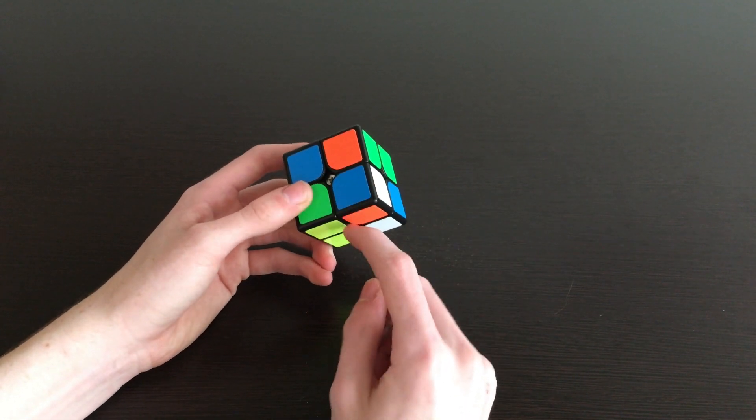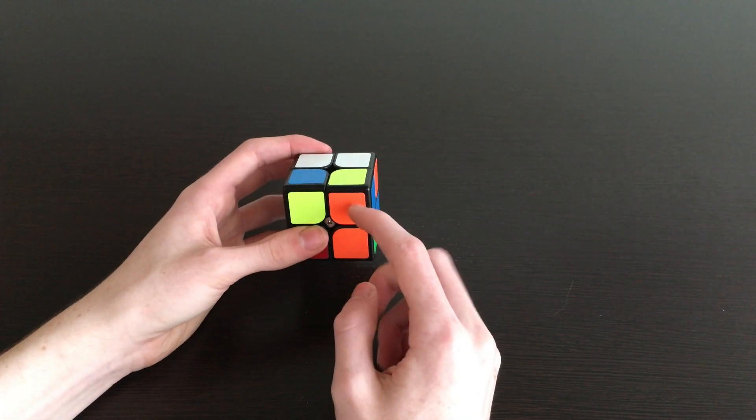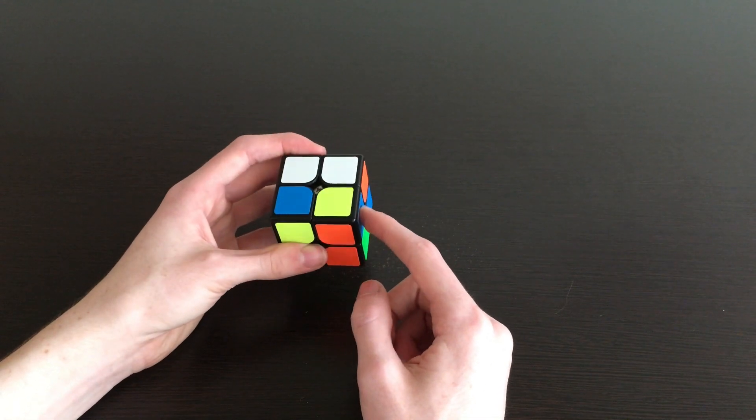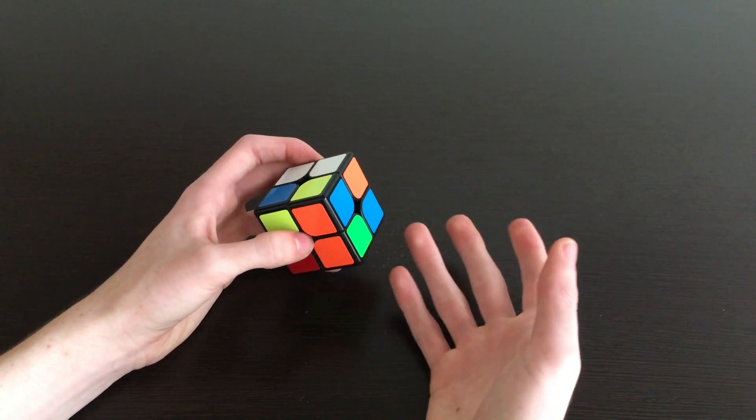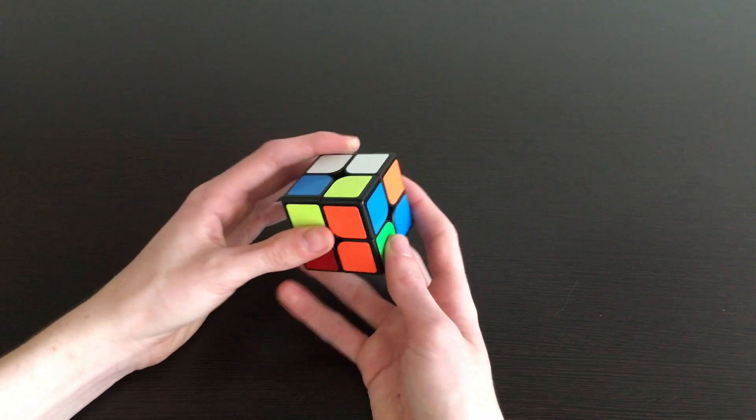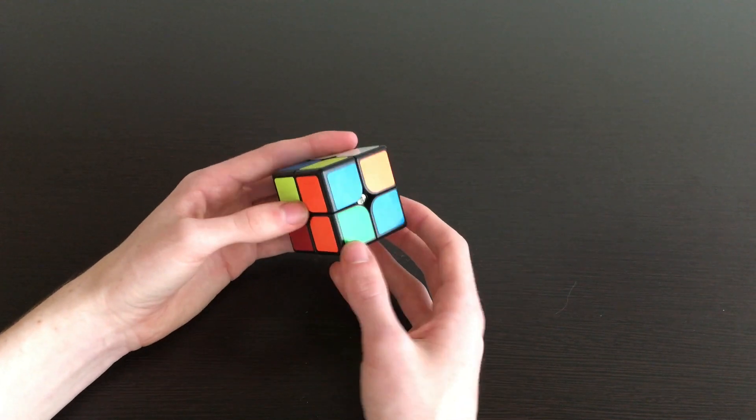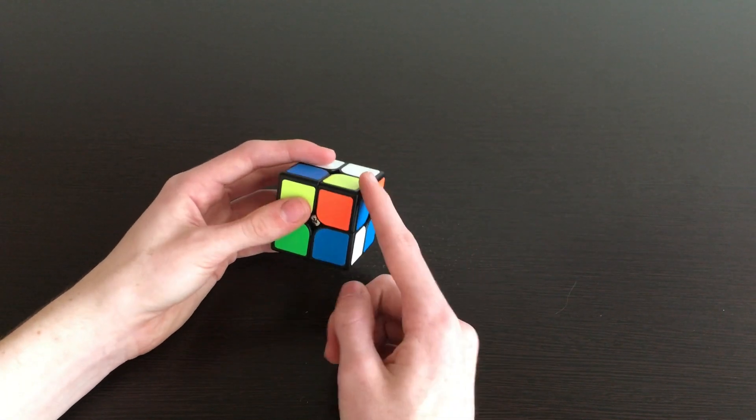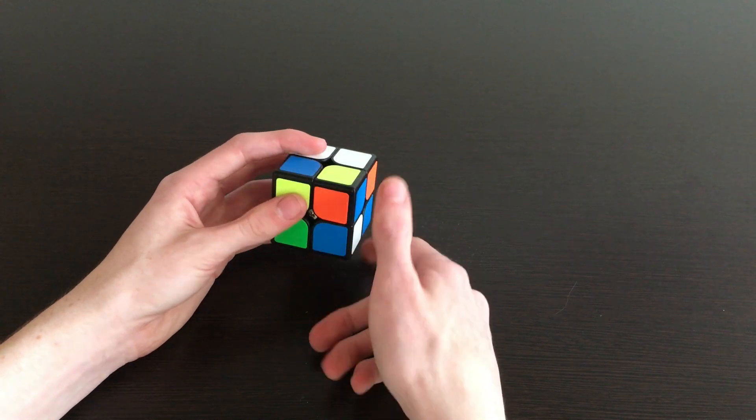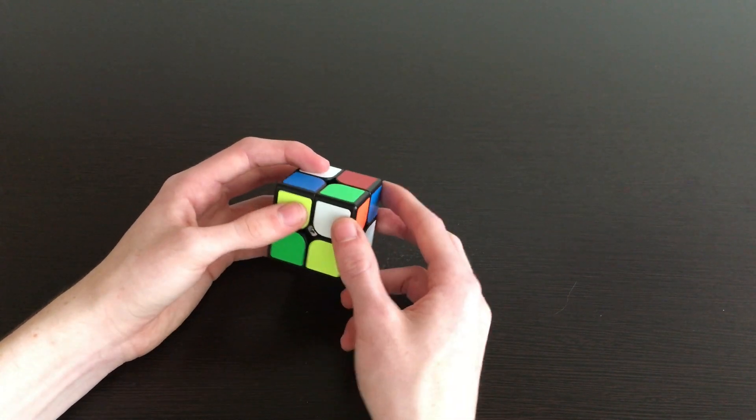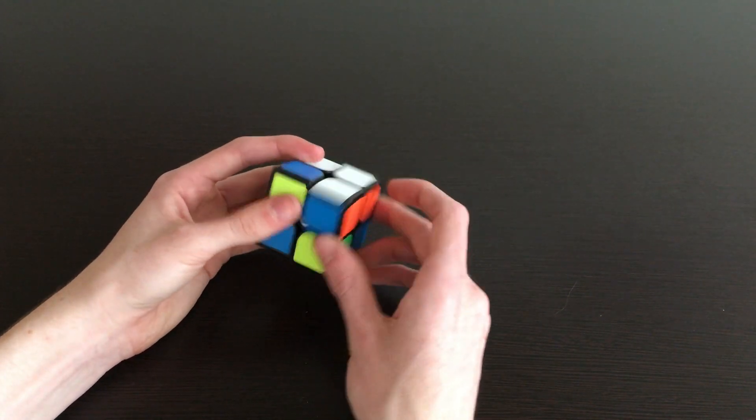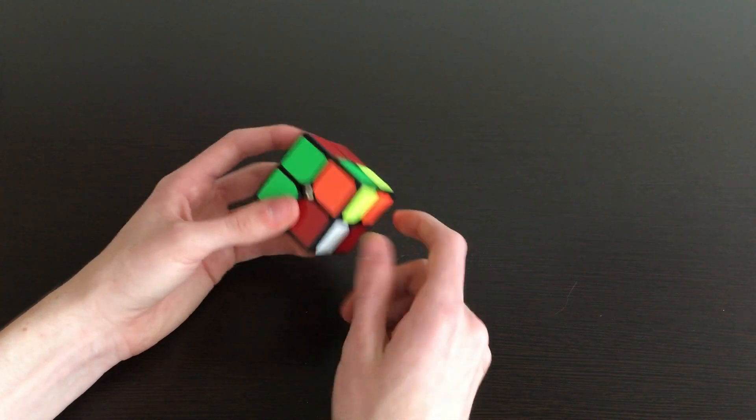Then we notice we have this corner piece that is white blue orange. White blue orange needs to go here. Because we're just skipping the cross step, we just have to go ahead and solve the corners how we would on a 3x3. We notice that it's underneath the slot, it's over here, so to do this we would turn the right side down, bring the corner into place, and then bring the right side back up.